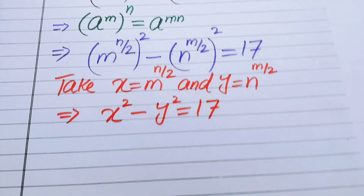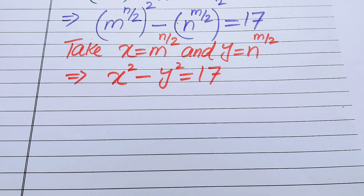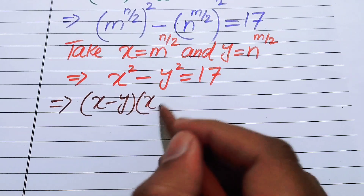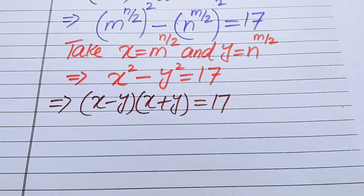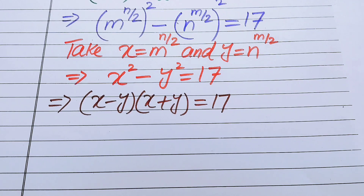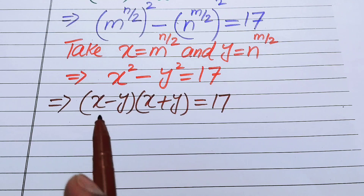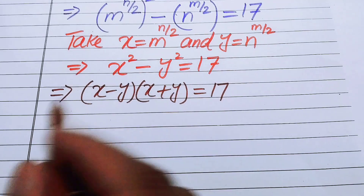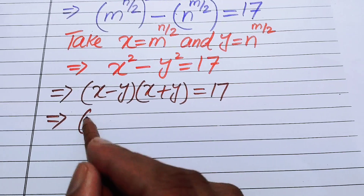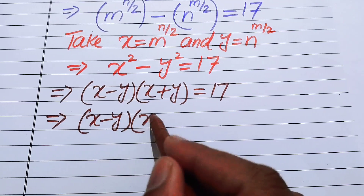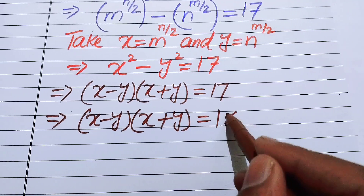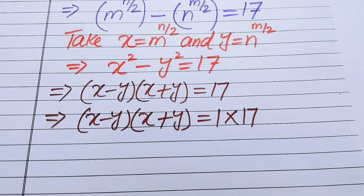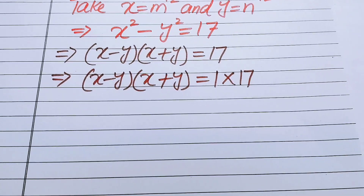We open the difference of squares identity: x squared minus y squared equals x minus y times x plus y, and this equals 17. Focusing on the left-hand side, we have two factors multiplied together. So we write the factors of 17 as 1 and 17, giving us x minus y times x plus y equals 1 times 17.